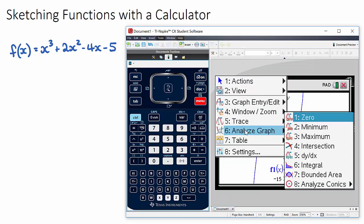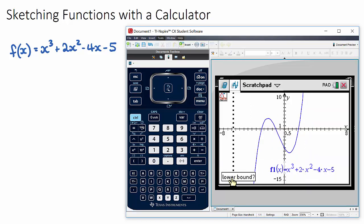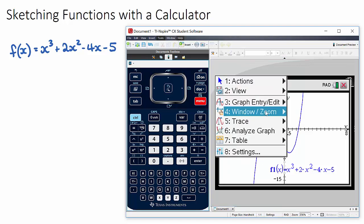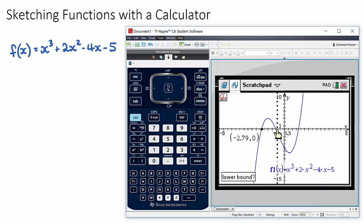Let's have a look at zero in the analyze graph - on your calculator it should be zero, this is x intercepts. If you click on zero it'll ask you to find a lower bound. There are three x intercepts, so they want you to define which one you want. If I click somewhere here and then an upper bound here, it'll tell you that this x intercept is negative 2.79 and zero. I could do it again - menu, analyze graph, zero - I could find this one or this one.